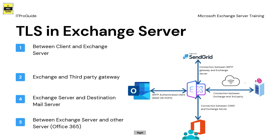Now let's look at where TLS can be used in Exchange Server. TLS can be used between the client and an Exchange Server — a simple example is IMAP or POP3. We can also use it between Exchange and third-party gateways, with a secure TLS mechanism like we use with SendGrid for example. Then between Exchange Server and destination mail servers — here we can use TLS to secure communication, but the destination mail server must also support TLS.